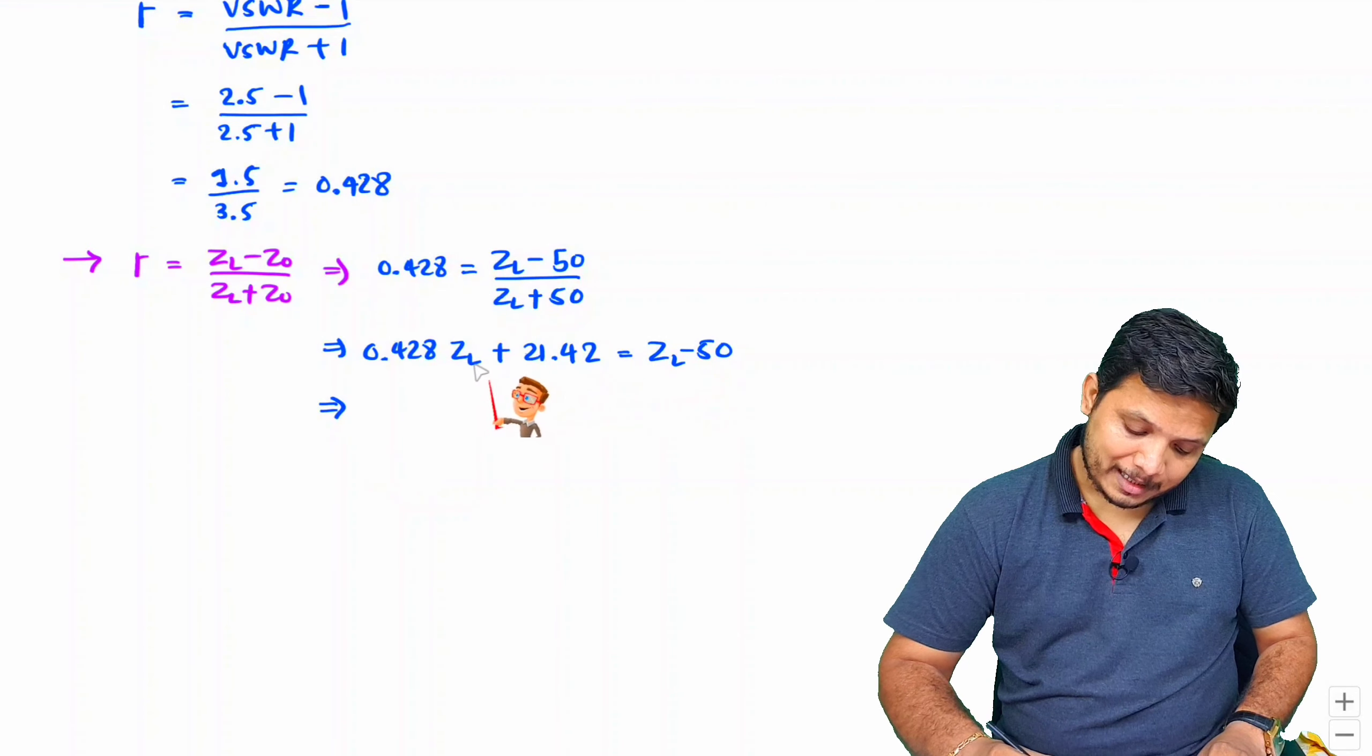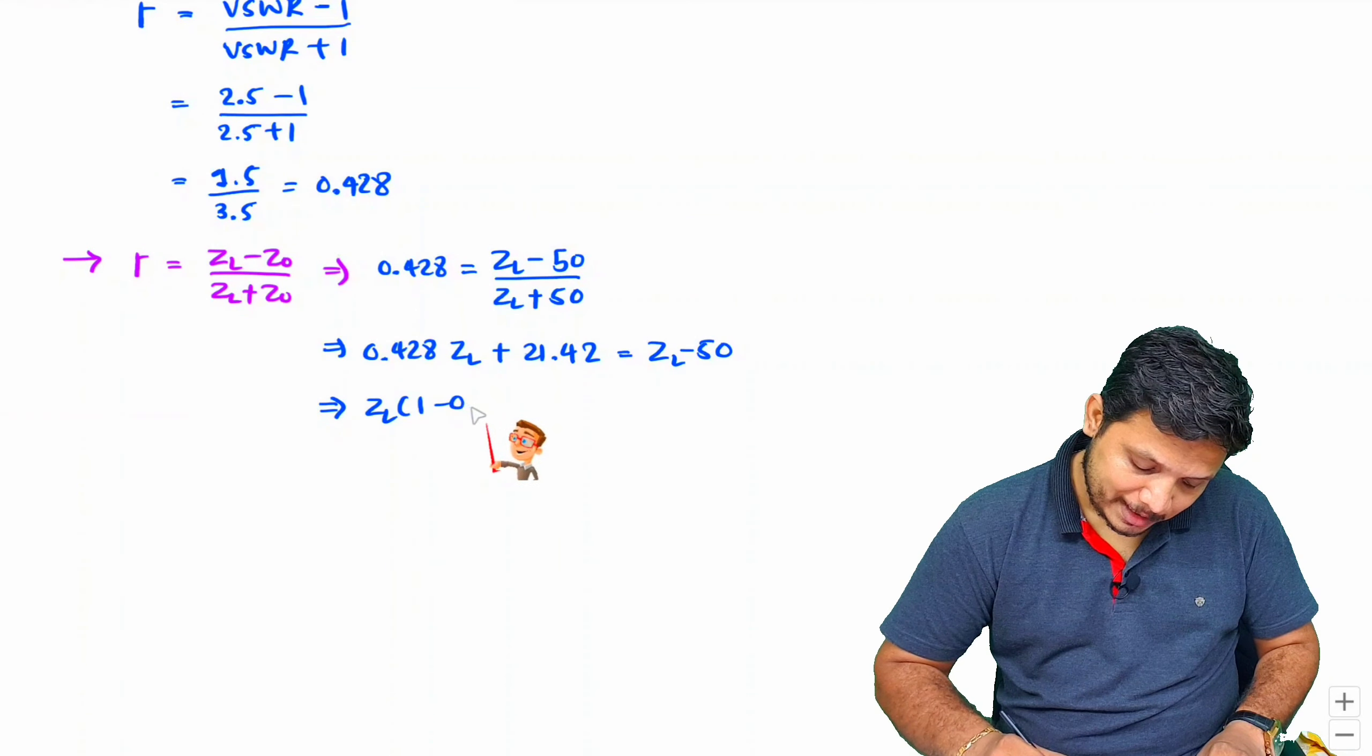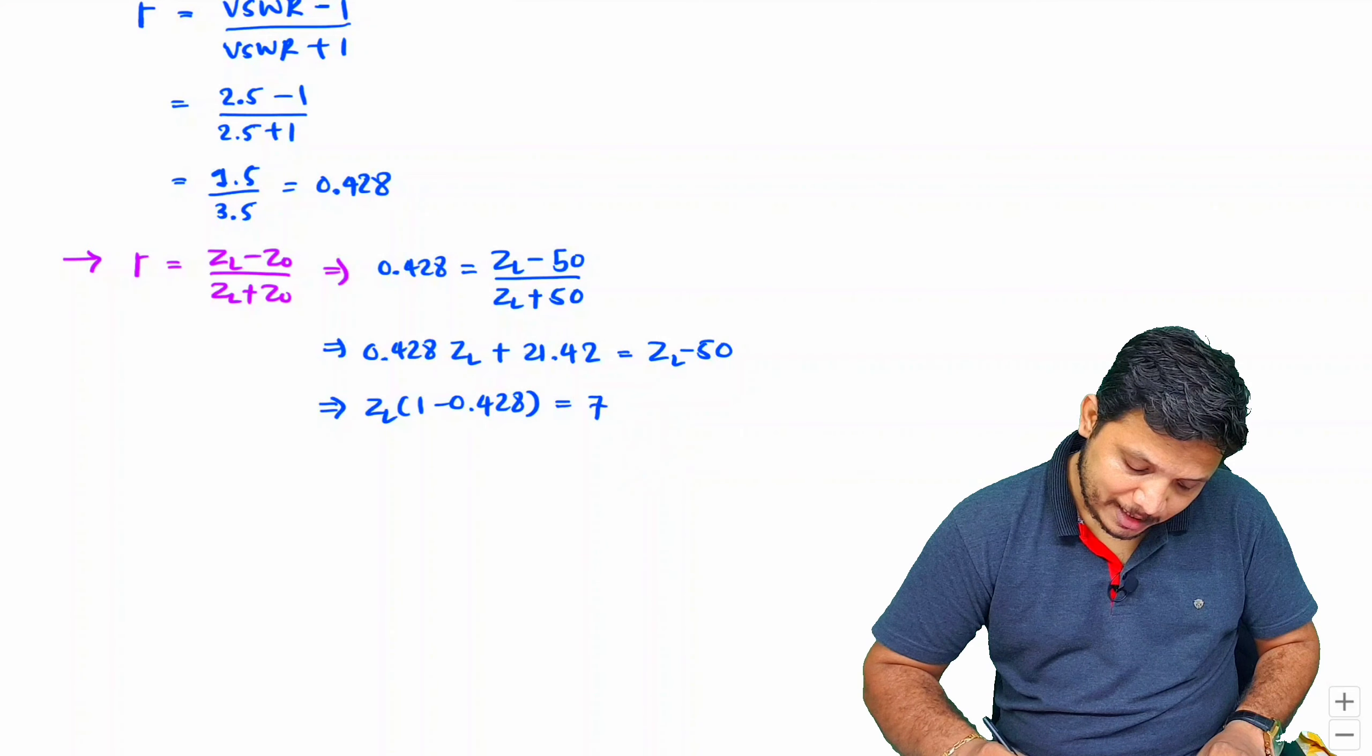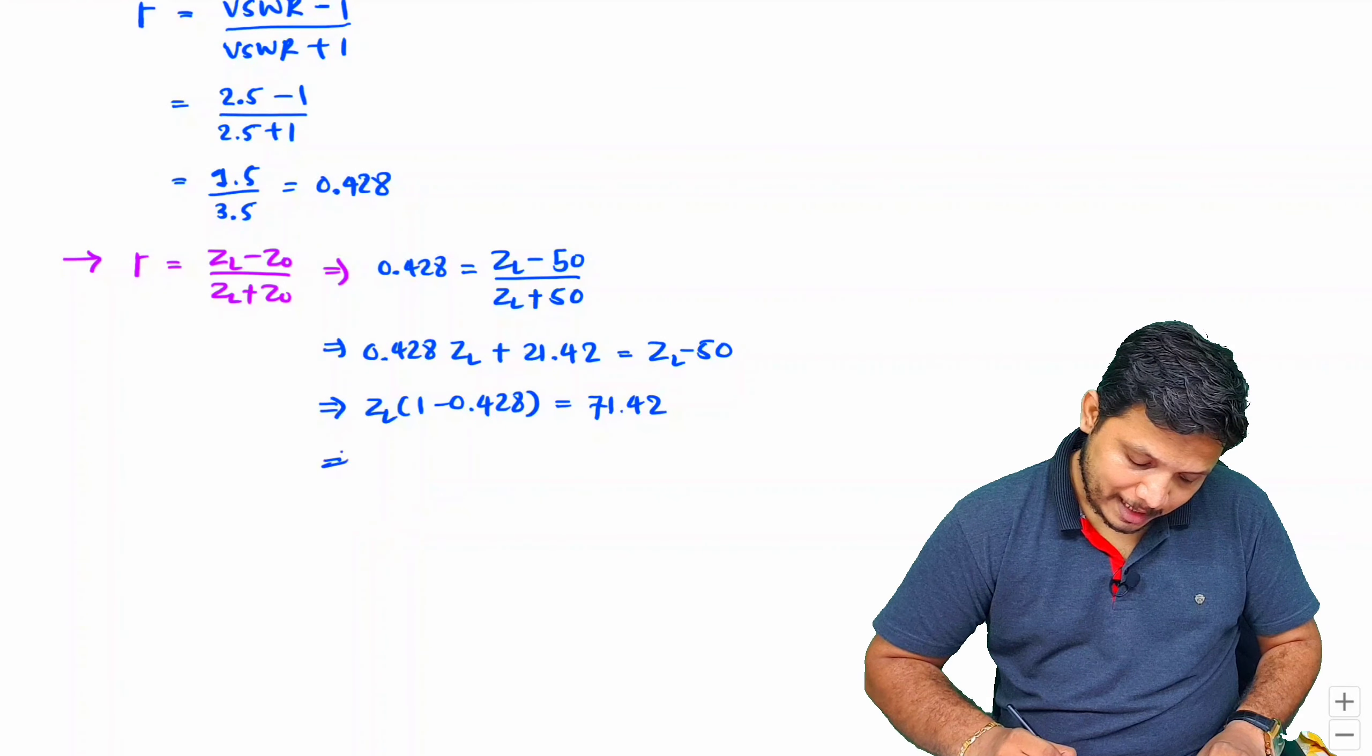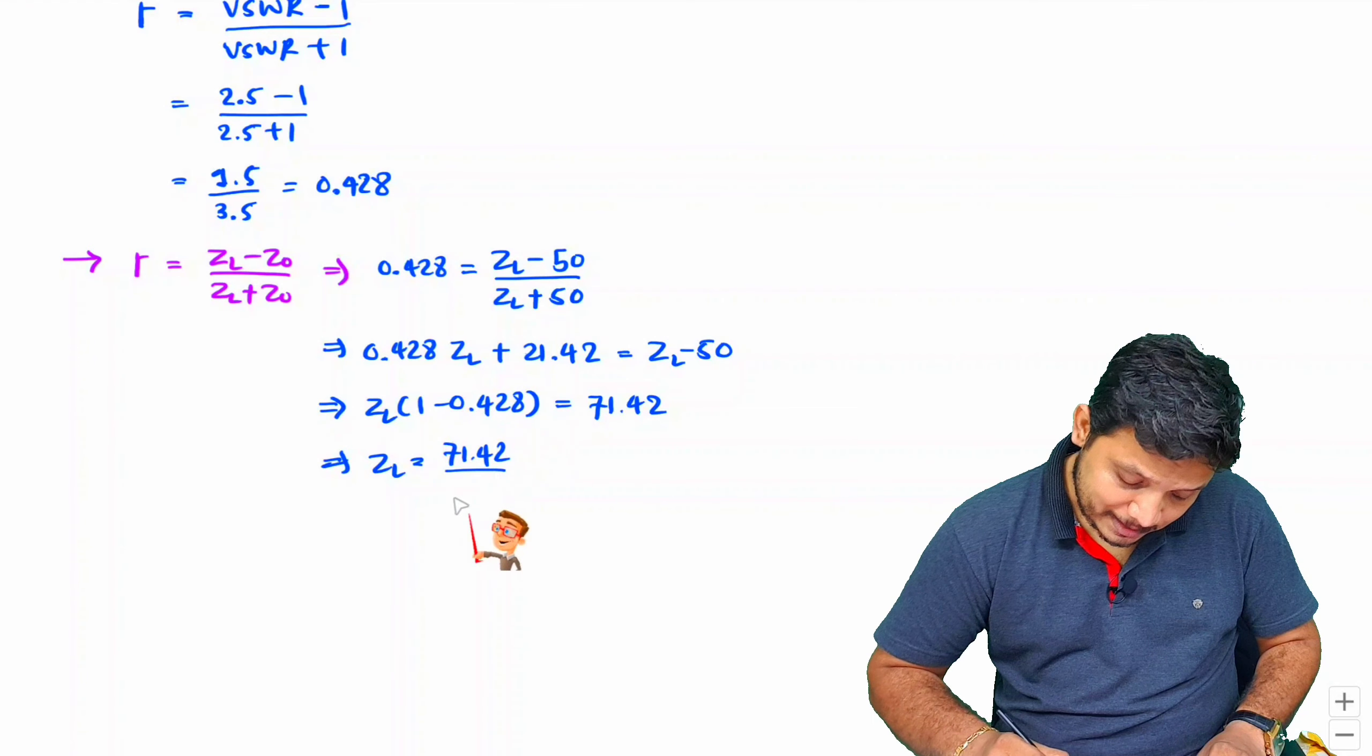Taking this term to the other side, we get ZL times 1 minus 0.428 equals 50 going to the other side, which will be 71.42. So 50 plus this and we'll be having ZL.